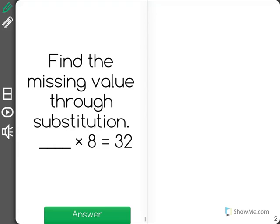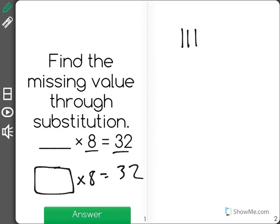Find the missing value through substitution. Blank times 8 equals 32. What this means is there's a certain number of groups of 8 that will give me a total of 32. So what I'm going to do is I'm going to count groups of 8 until I get up to 32.